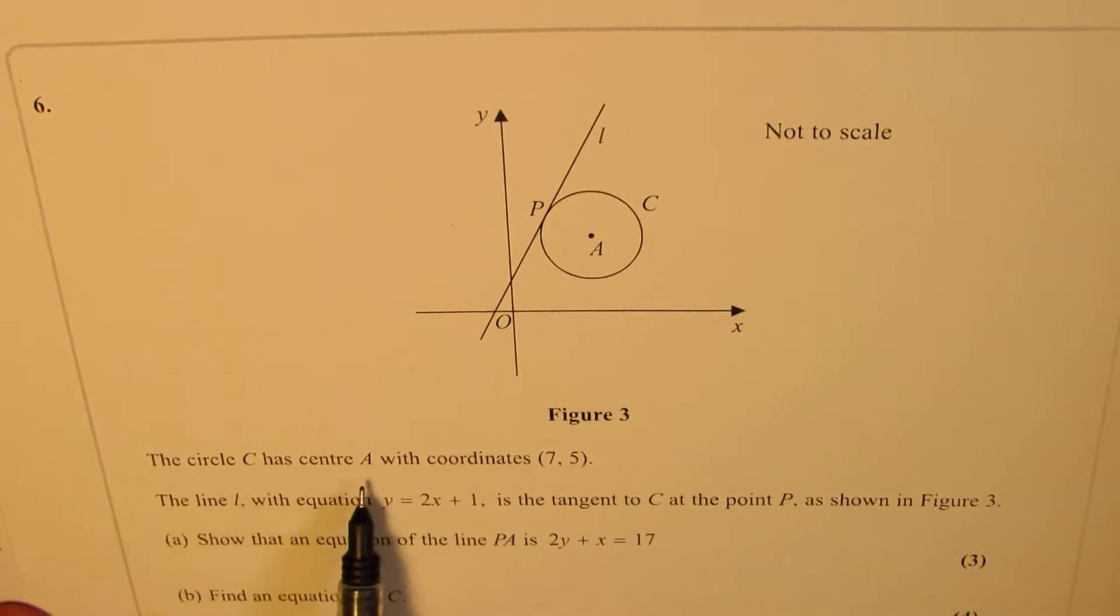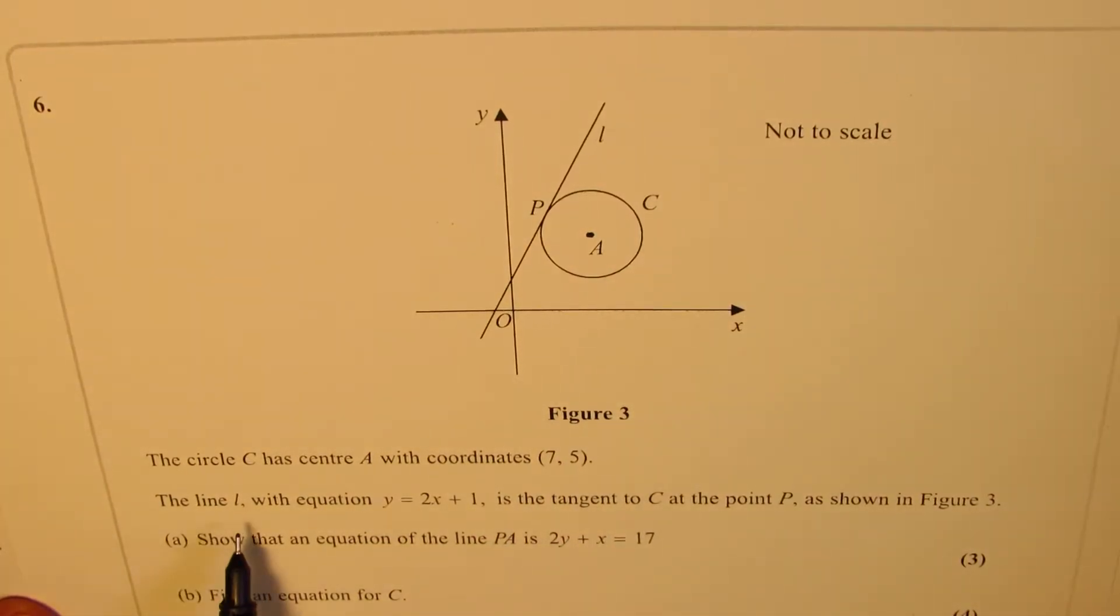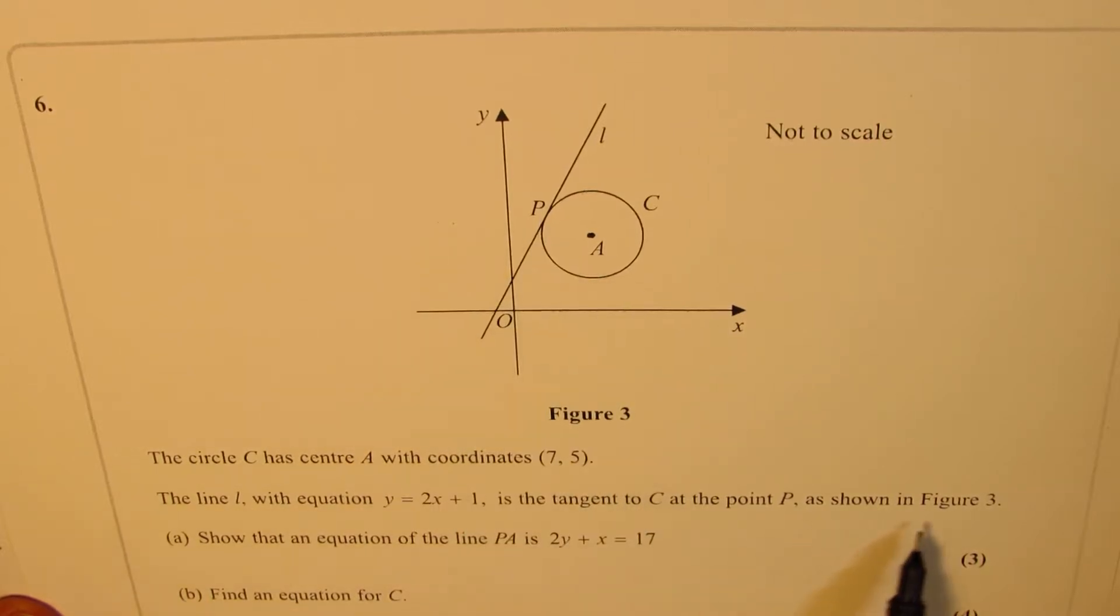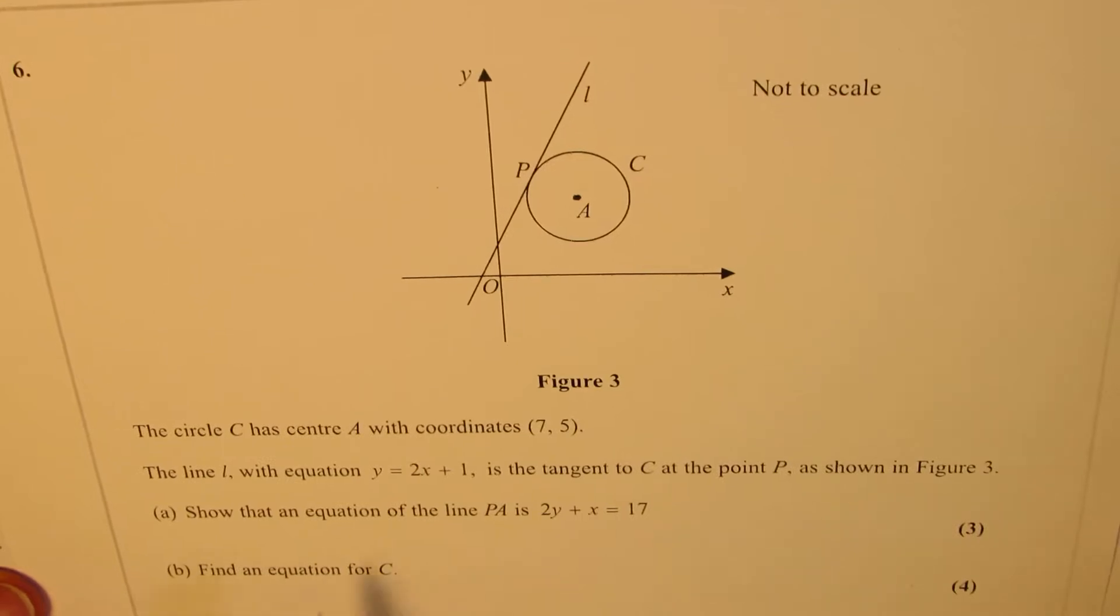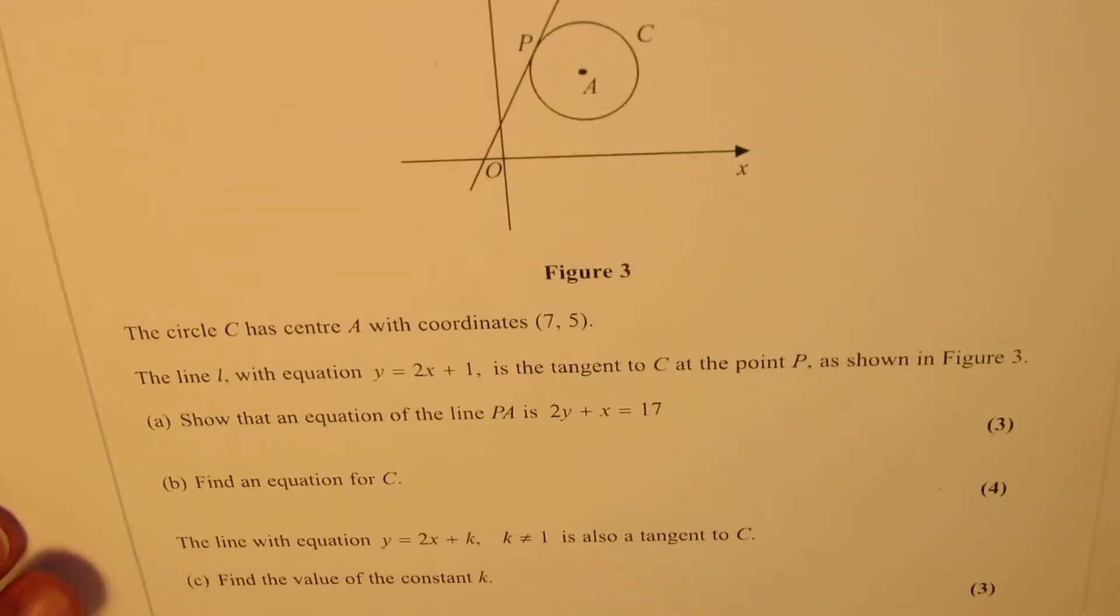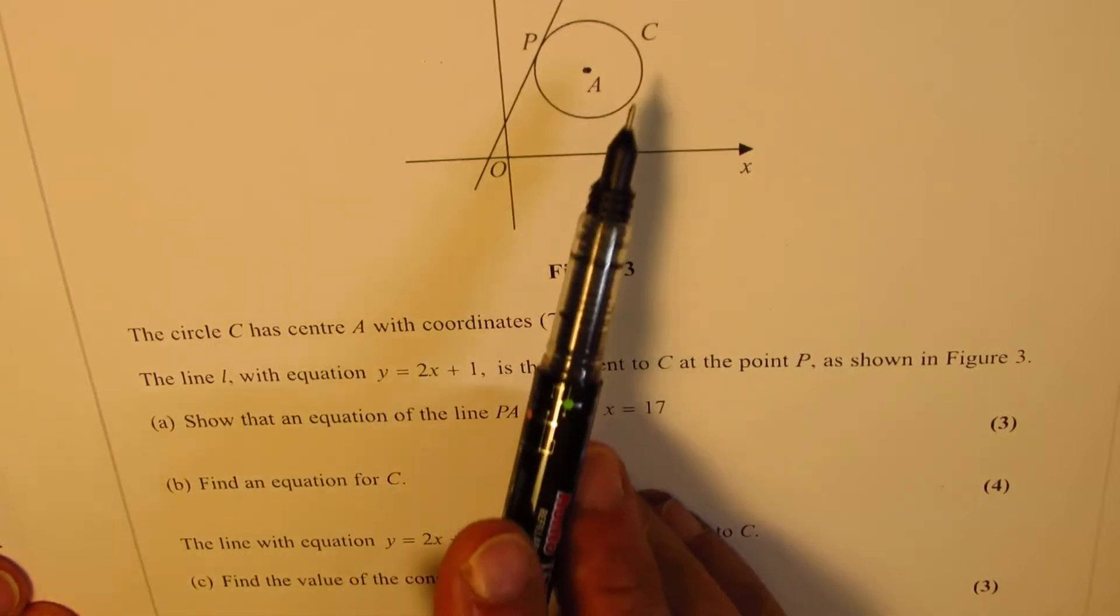A circle C has center A with coordinates (7, 5). Line L, with equation y = 2x + 1, is tangent to C at point P as shown in Figure 3. Part A: Show that an equation of line PA is 2y + x = 17. Part B: Find an equation for the circle C.